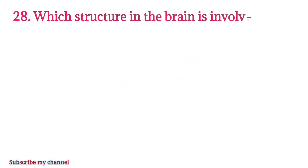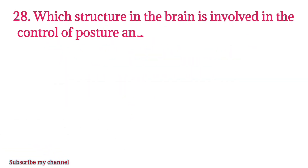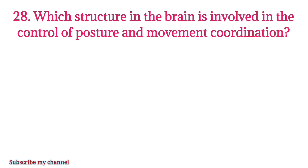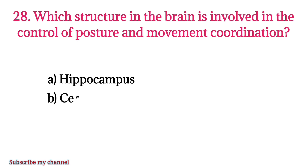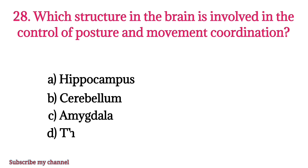MCQ number twenty-eight: Which structure in the brain is involved in the control of posture and movement coordination? Option A: hippocampus, option B: cerebrum, option C: amygdala, option D: thalamus. The right option is option B.